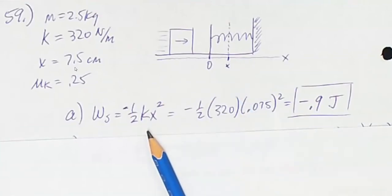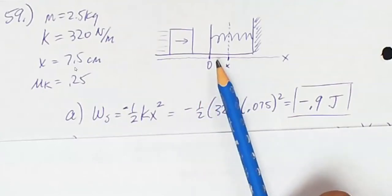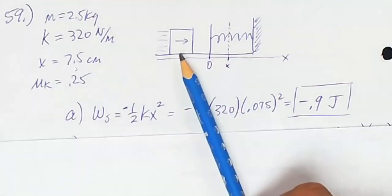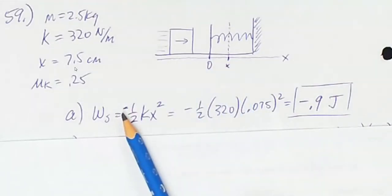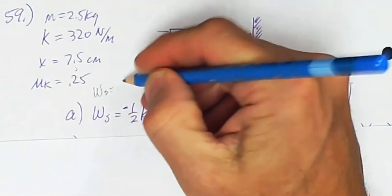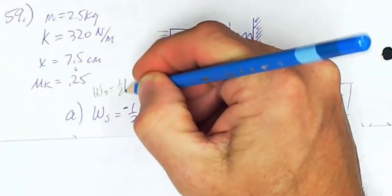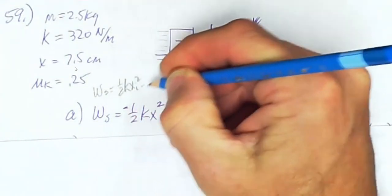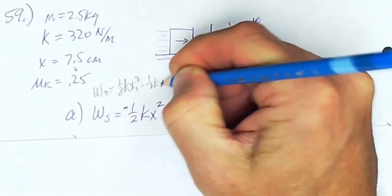And because this energy is now in the spring, that means it did negative work on the block. So my answer for the work done by the spring is negative one-half kx squared. Or if you want to use the traditional equation, the work done by the spring is one-half kx initial squared minus one-half kx final squared.